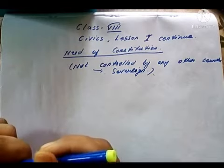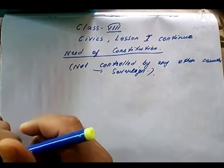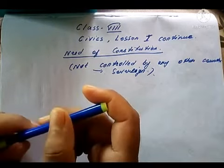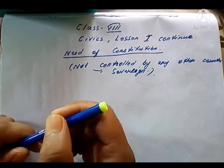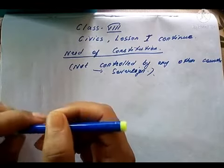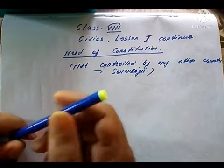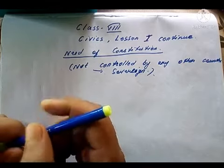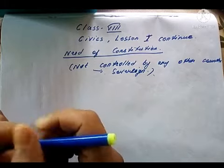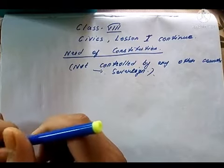It is the constitution that defines the role and power of people's elected representatives, such as Members of Parliament and Members of State Legislative Assemblies. We have elections of Rajya Sabha and Lok Sabha every five years, and also local elections of town committees and panchayats. All these are described in the constitution of India. The constitution also describes the functioning of the government — how the government will administer the country.